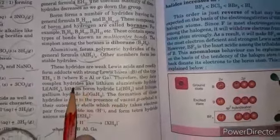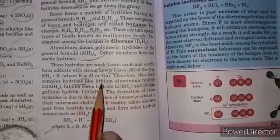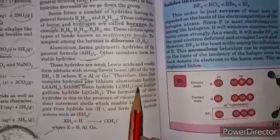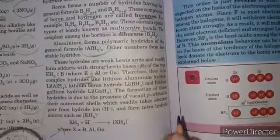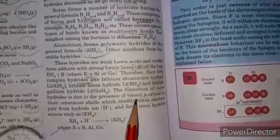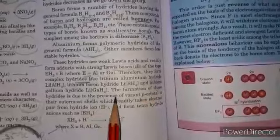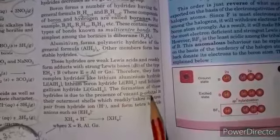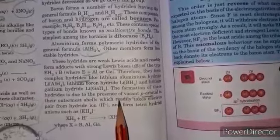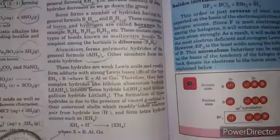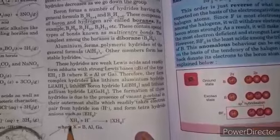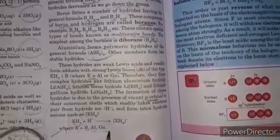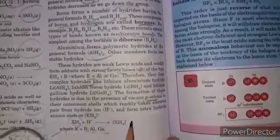They have tendency to form complex compounds like lithium aluminum hydride and lithium borohydride. These act as strong reducing agents because they have availability of electrons due to presence of vacant p orbitals in their outermost shell.